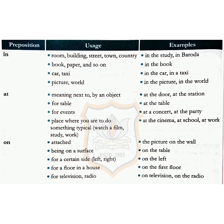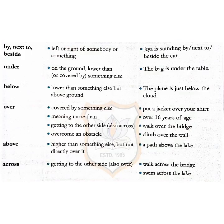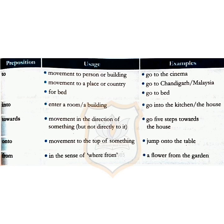In the same way, prepositions of place are: in, at, on, by, next to, beside, under, below, over, above, across, to, into, towards, unto, from. In this table, the usage and the examples are given. You should go through it and read it again and again so that you can understand where prepositions of place are used. The more you read, the more you understand how to use the preposition.